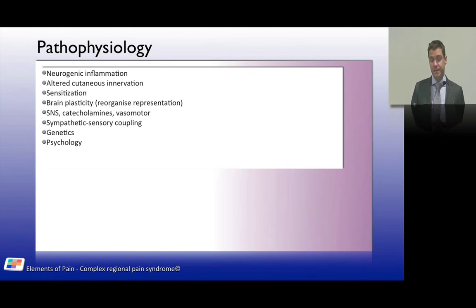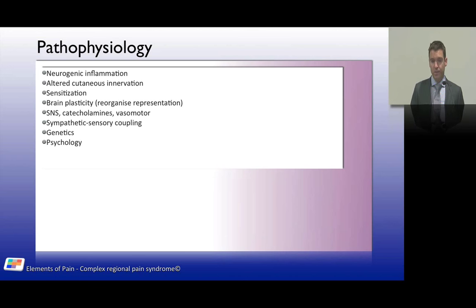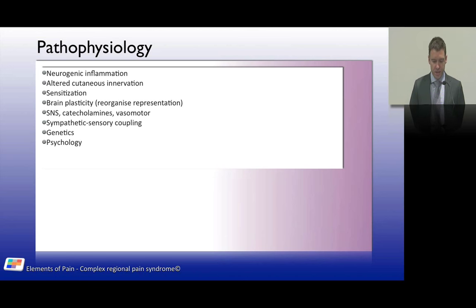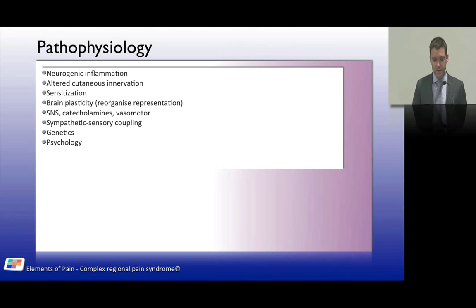The pathophysiology of CRPS is complex and the literature can be confusing. It can be divided into several categories: neurogenic inflammation, changes in cutaneous innervation such as small fiber density, sensitization and brain plasticity, changes to the sympathetic nervous system including sympathetic-sensory coupling, and genetic and psychological aspects.